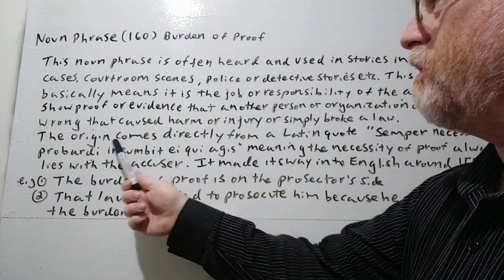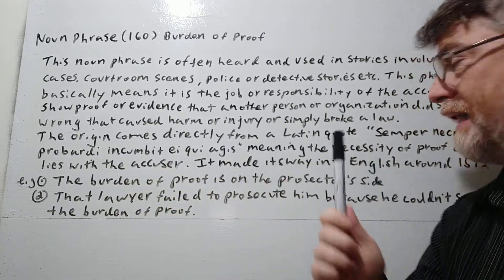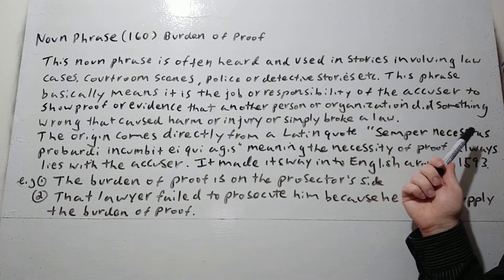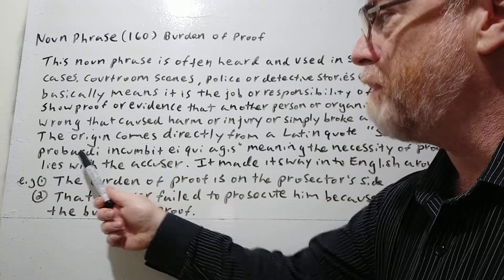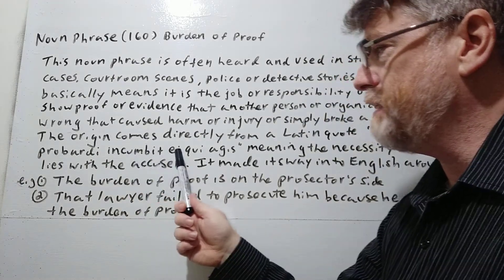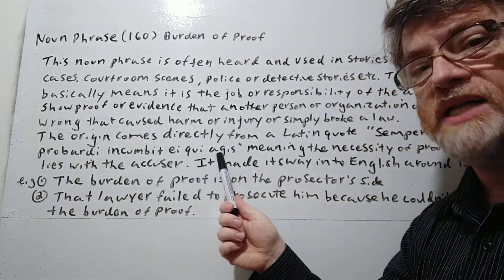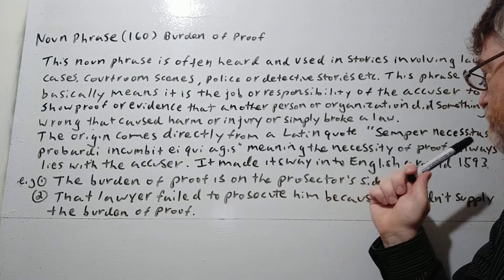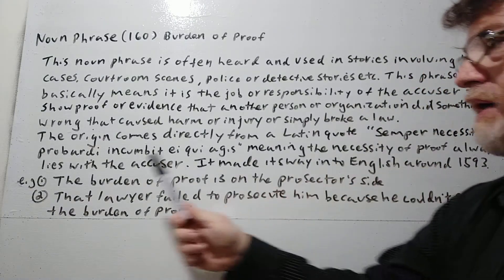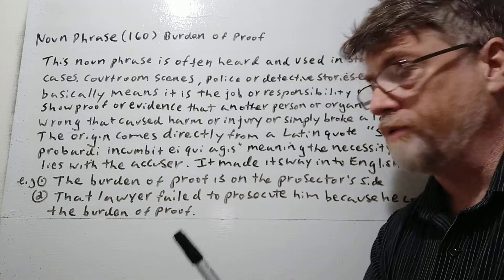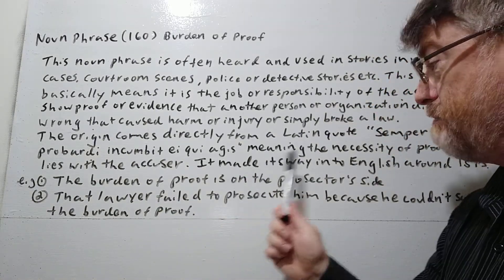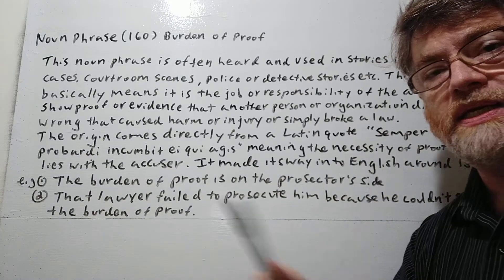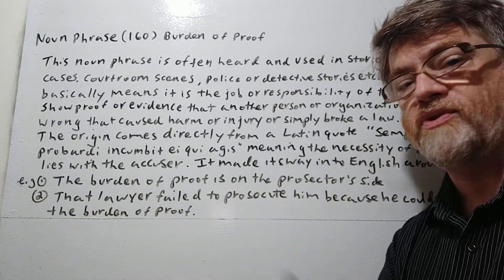The origin comes directly from a Latin quote: 'Semper necessitas probandi incumbit ei qui agit,' meaning the necessity of proof always lies with the accuser. It made its way into English around 1593 — that's when it first started to appear.